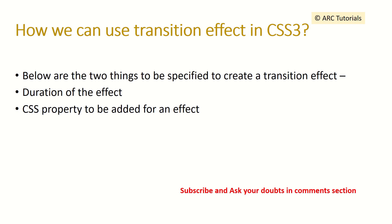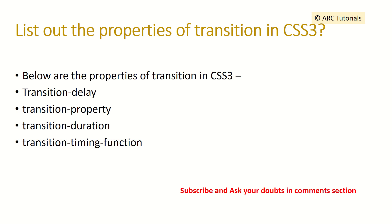How can we use transition effects in CSS3? There are two things to specify: the duration of the effect and the CSS property to which the transition applies. The transition properties in CSS3 are transition-delay, transition-property, transition-duration, and transition-timing-function — these four properties let you create animations in your UI.